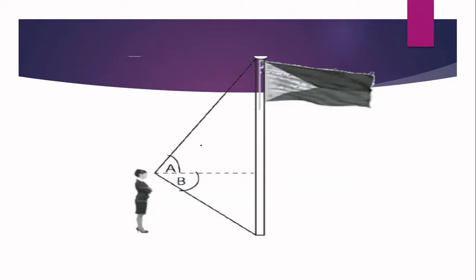In the third figure, we have two angles — angle A and angle B. Considering that the observer is looking at the top of the flagpole, angle A is the angle of elevation. On the other hand, when the observer looks at the bottom of the flagpole, angle B is the angle of depression.